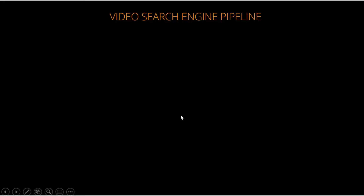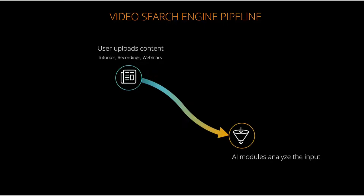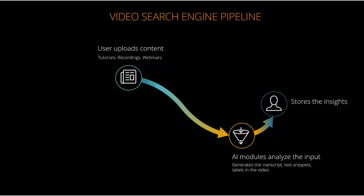Now let us look at how this video search engine pipeline is built. The first thing is the user uploads content - tutorials, recordings, webinars. Once the videos get uploaded, there are AI modules in the backend. For this demonstration, we are going to look at Google's Video Intelligence API, which will automatically look at the video, generate the transcript, identify different text snippets shown in the background, and also the labels in the video. Once it identifies all that, it is going to store the insights and push them into the backend database.